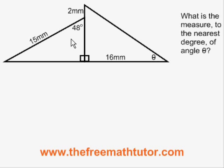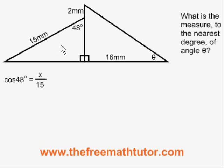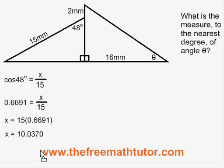This is a CAH situation. We fill in the CAH formula: cos of 48 degrees is equal to the adjacent X over hypotenuse 15. We plug the values into the formula and simplify, and we get X equals 10.0370 millimeters, rounded off to four decimal places.